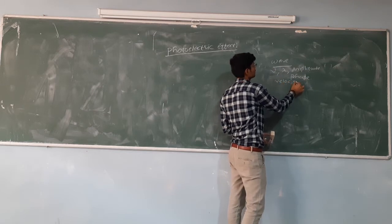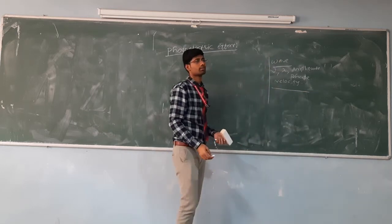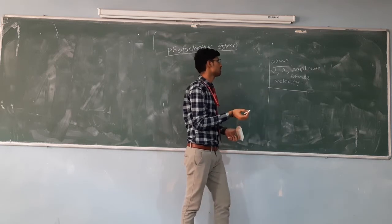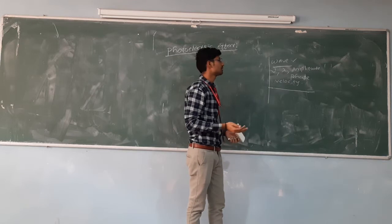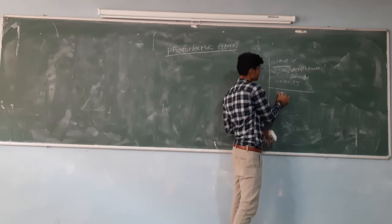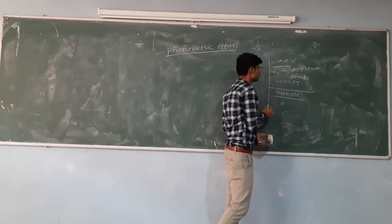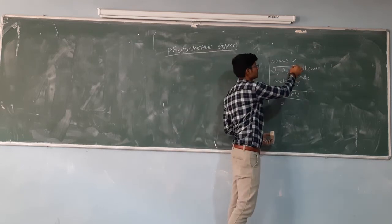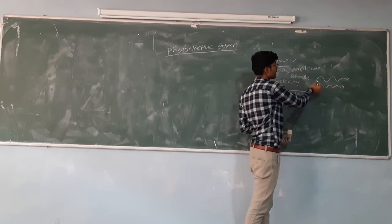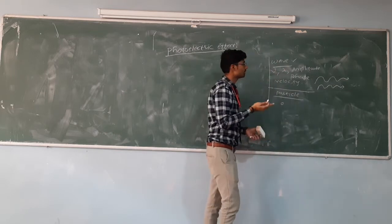amplitude, phase and velocities — those are group velocities, otherwise we can say phase velocities. We can define the wave as a disturbance which can transmit energy from one point to another point. So a wave is a form of energy that can transmit energy from one point to another. In case of wave there is no specific location — wave can spread out, it is a pattern of disturbance.